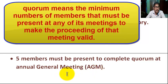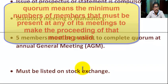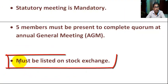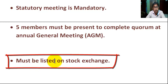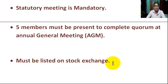In the annual general meeting, five members must be present to complete the quorum at the AGM. Next, the company must be listed on the stock exchange.